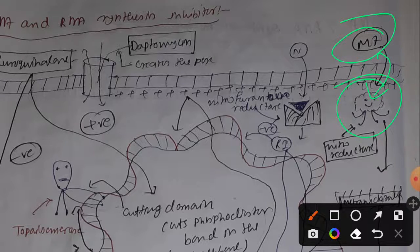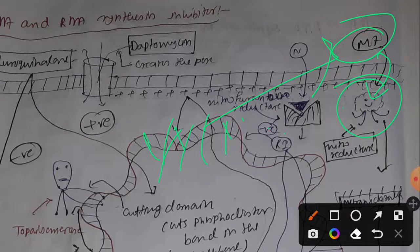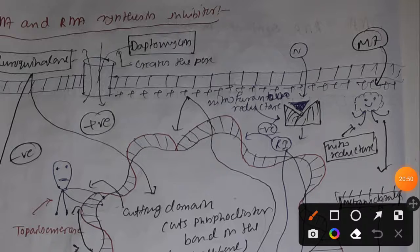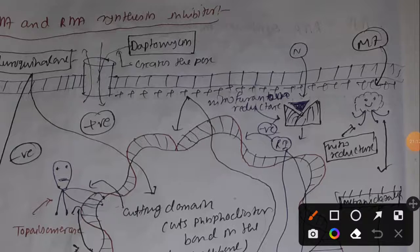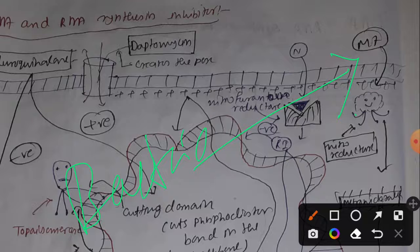Regarding metronidazole: it binds with nitroreductase, which converts it into an active metabolite. This active metabolite causes disruption of the double-helical structure, facilitating DNA fragmentation by DNase — a bactericidal activity. We can use metronidazole for both gram-positive and gram-negative bacteria, especially for ulcer treatment caused by Helicobacter pylori, various protozoal infections such as Entamoeba histolytica and Giardia lamblia, and bacterial vaginosis.